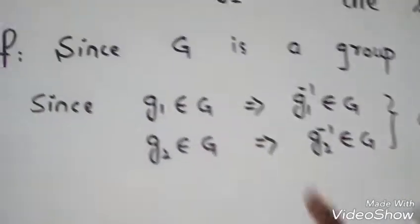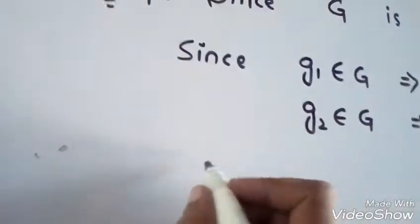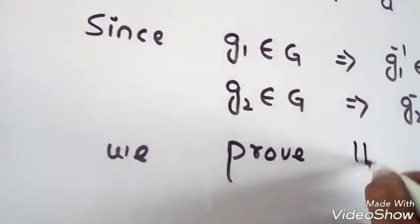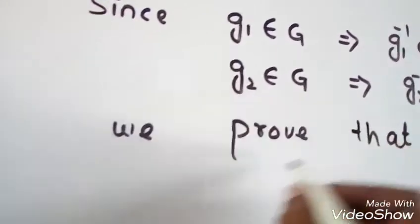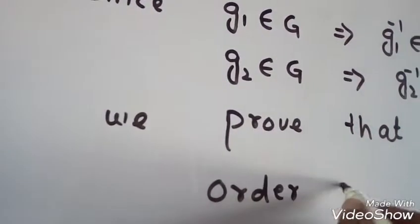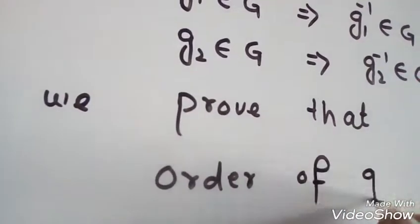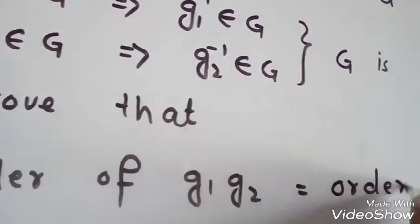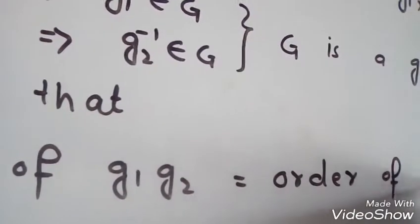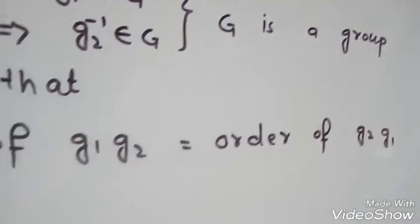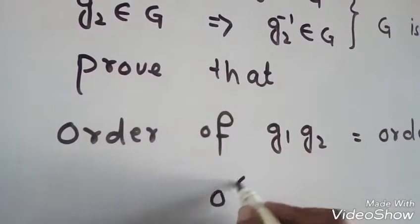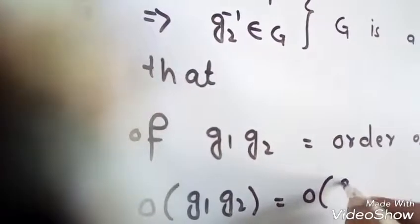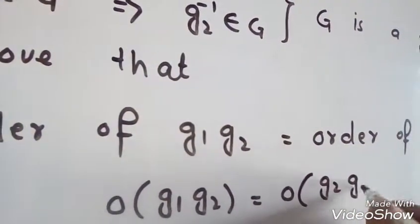Clear? So we need to prove order of G1·G2 equals order of G2·G1. This is what we need to prove. Order of G1·G2 is equal to order of G2·G1.